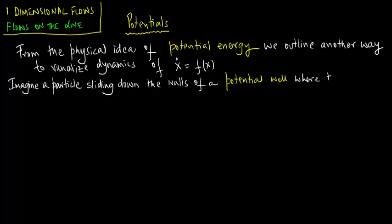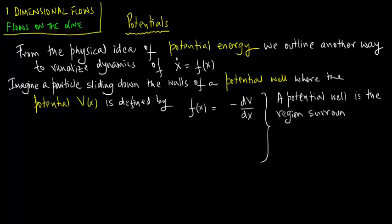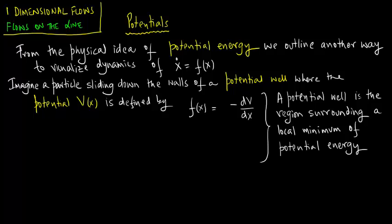The potential V of x is defined by f of x equals minus dV dx. A potential well is the region surrounding a local minimum of potential energy. Let us make a simple-minded plot of V of x versus x — that is your potential well.